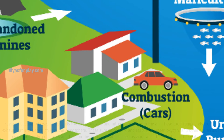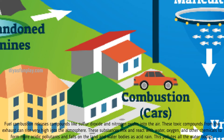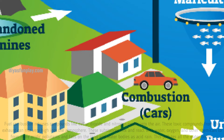Combustion of fossil fuels. Fuel combustion releases compounds like sulfur dioxide and nitrogen oxides into the air. These toxic compounds from the exhaust can rise very high into the atmosphere. These substances mix and react with water, oxygen, and other chemicals to form more acidic pollutants, and fall on the land and water bodies as acid rain. This pollutes all the water bodies.